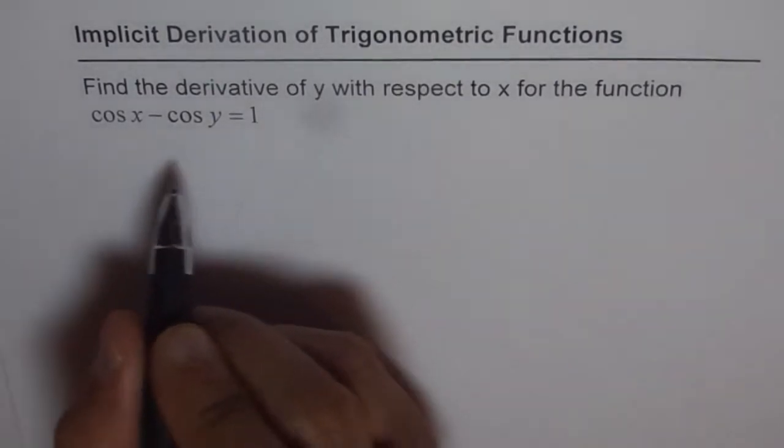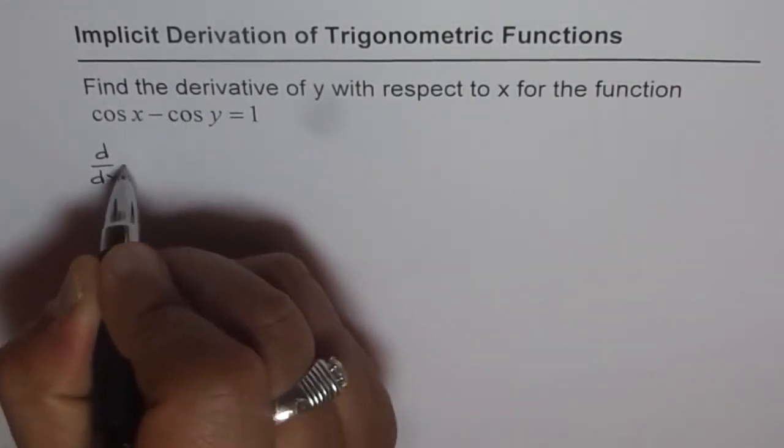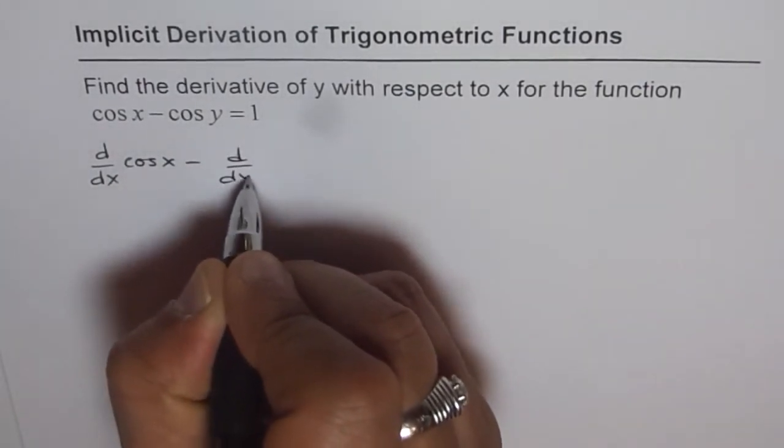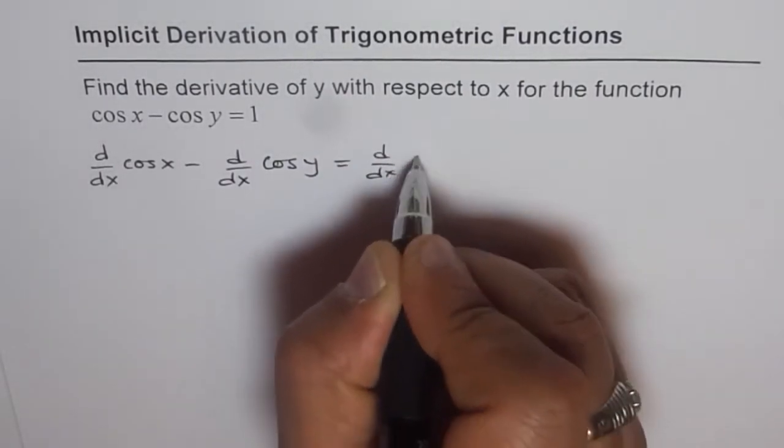Let us differentiate both sides with respect to x. We get d/dx of cos x minus d/dx of cos y equals d/dx of 1.